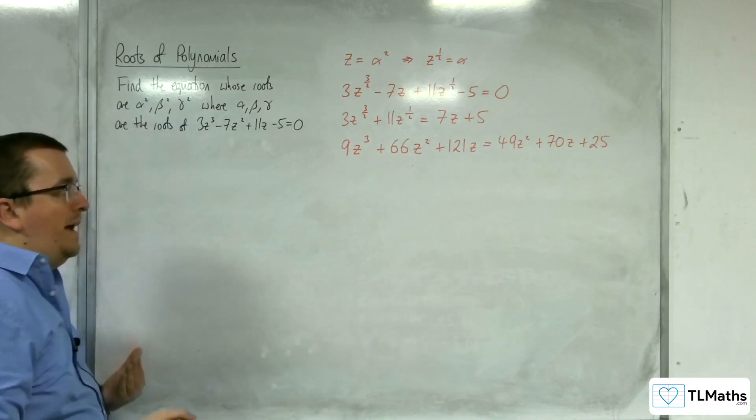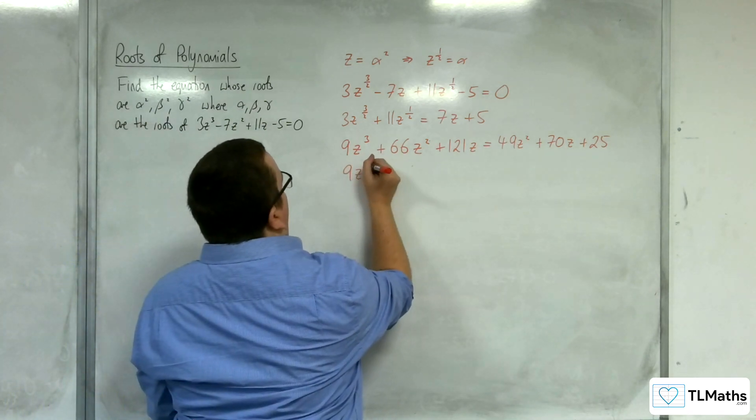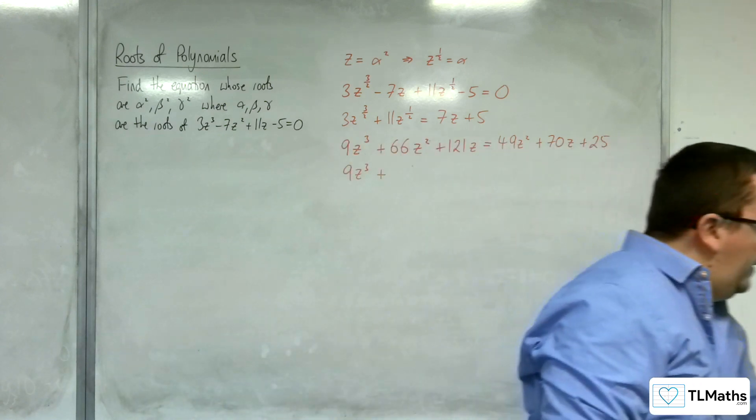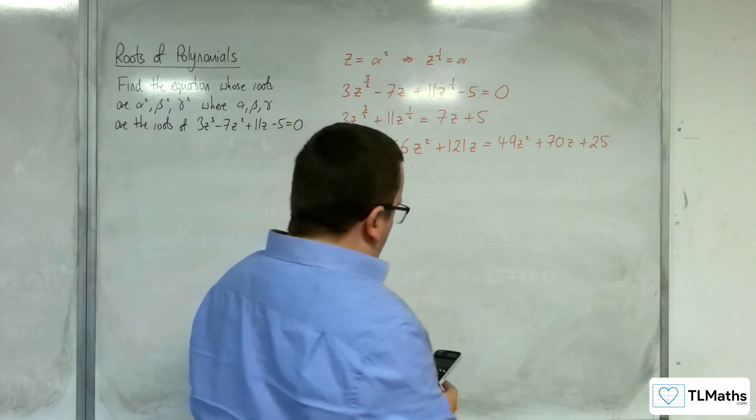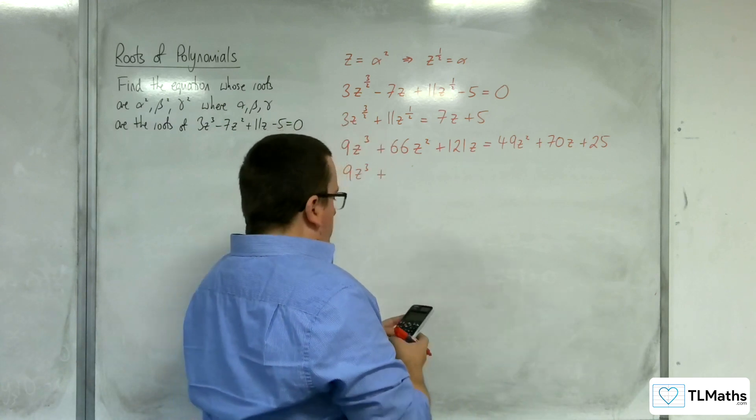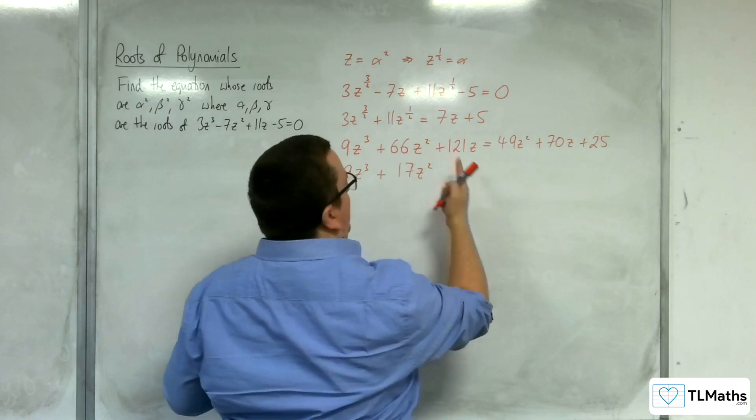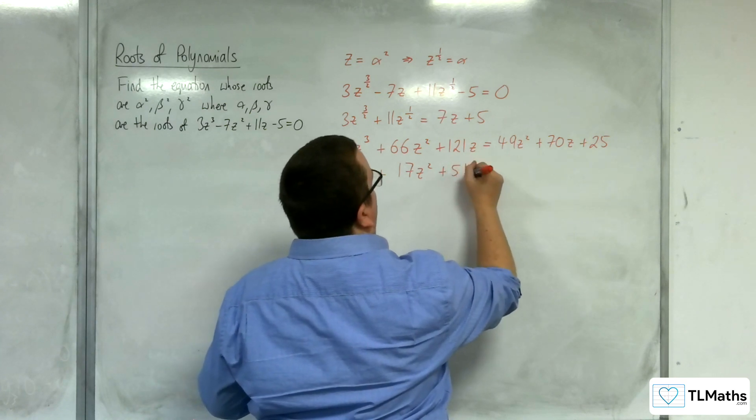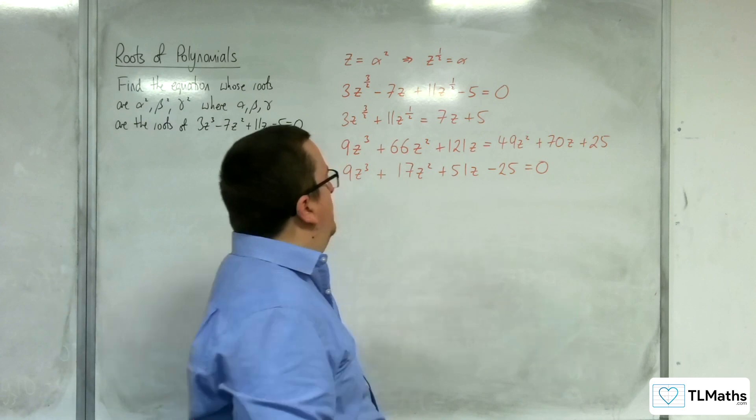If I move everything back onto one side of the equation now, we have 9z³ plus, so we've got the 66 take away 49, so 17z², and then we've got 121z take away 70z, so that's 51z remaining, and then take away 25 equals 0.